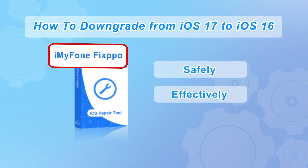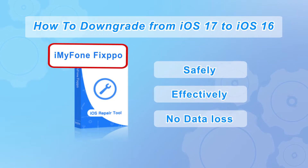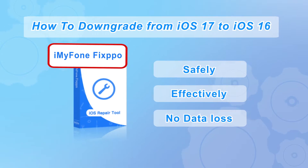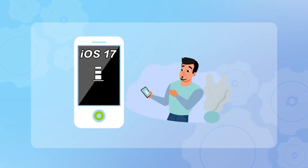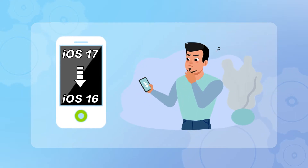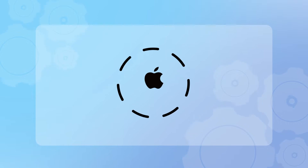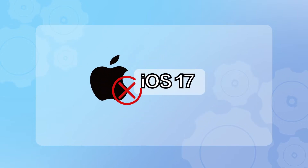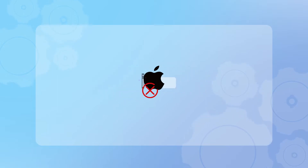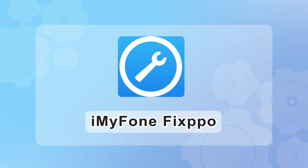I'll show you how to downgrade safely, effectively, and without data loss using the powerful iMyPhone Fixbow tool. Before we proceed, let me clarify that downgrading iOS versions can be a bit tricky and comes with risks. Apple doesn't officially support downgrades, and you should only attempt this if you encounter significant issues with iOS 17. That said, iMyPhone Fixbow is a powerful tool that can help you through the process with ease.